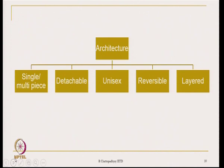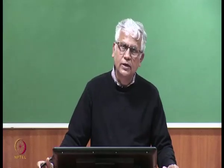There are five types: single or multipiece products, detachable architecture, unisex architecture, reversible architecture, and layered architecture. These are the five types of architecture generally practiced in textile products, and we are going to discuss each one by one.